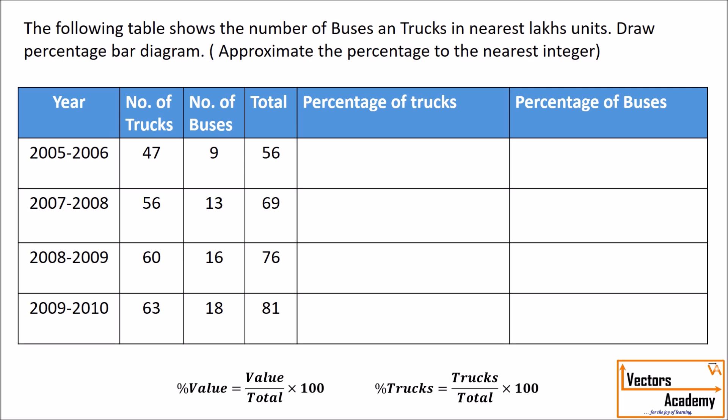For the first year, 2005-2006, there are 47 trucks and a total of 56. So the percentage of trucks will be 47 upon 56 into 100, which comes to 83.93. Similarly, for the year 2007-2008, the number of trucks is 56 and the total is 69, so the percentage of trucks is 56 upon 69 into 100, which comes out to 81.16.